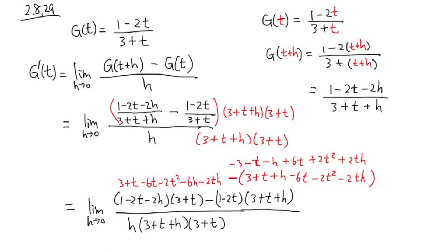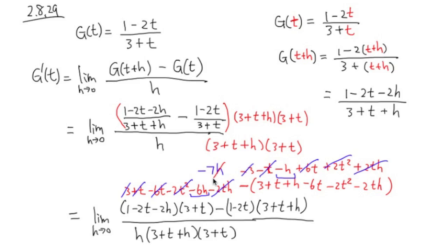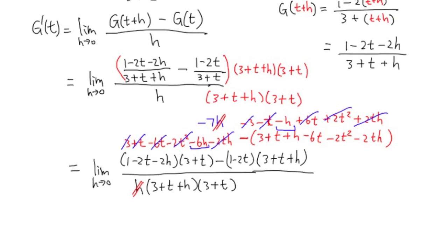Now we have a lot of things to cancel. The positive 3 cancels with negative 3, positive t cancels with negative t, negative 6t cancels with positive 6t, negative 2t squared cancels with positive 2t squared, and negative 2th cancels with positive 2th. What remains on top is negative 6h and negative h, giving us negative 7h. This h cancels with the h in the denominator.